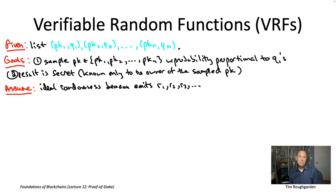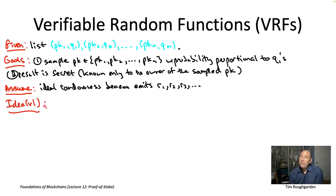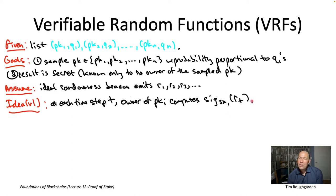That's the first key intuition behind verifiable random functions — we want someone to do a computation that only they can do. So let's just have them sign something using their private key. Everybody knows the corresponding public key; it's sitting in the designated staking contract. If we're going to have people signing things, what are they signing? Not something constant like the empty message, because we want independent random sampling at every time step. What differs across time steps? Most obviously, the randomness beacon emission. So the simplest thing is to have everybody sign the current randomness R_t.